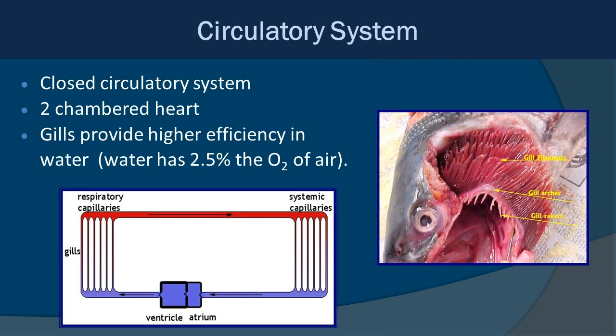Fish have a closed circulatory system with a two-chambered heart. Gills provide very high efficiency for gas exchange in a water environment. Water actually only has about two and a half percent of the dissolved oxygen that air has, which is one reason why lungs don't work well underwater — it's hard to exchange enough volume of water through lungs, and the low oxygen percentage compounds the problem. The moral of the story is that gills function very well in water and allow fish to go through respiratory processes very effectively and efficiently.